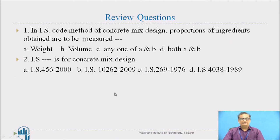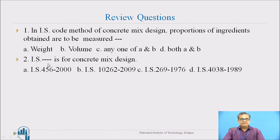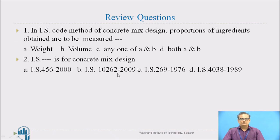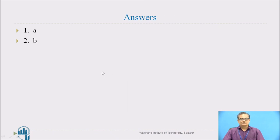Once the trial mix results are satisfactory, the proportions are finalized. Here is a review question: in the IS code method of concrete mix design, proportions of ingredients obtained are to be measured by weight, by volume, or by both methods? Also, which IS number is used for concrete mix design? The answers: Question 1 — Option A, by weight. Question 2 — Option B, IS 10262:2009.